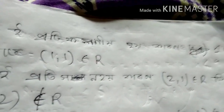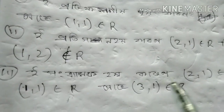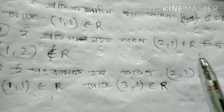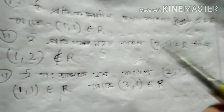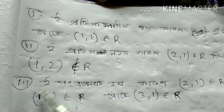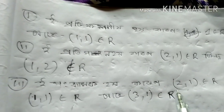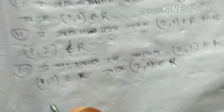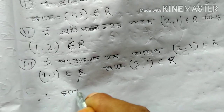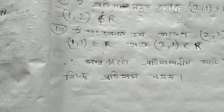2,1 belongs to R. 1,2 does not belong to R. 1,1 belongs to R. 3,1 belongs to R. 1,1 belongs to R. 1,2 belongs to R. 2,1 belongs to R. This is the first question to be asked.